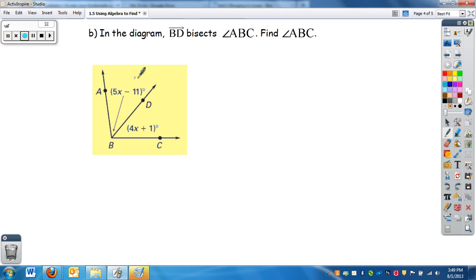In this diagram BD bisects angle ABC. Well bisects means to cut in half. So this angle is congruent to the other angle. That tells me that the measure of angle ABD equals the measure of angle DBC.